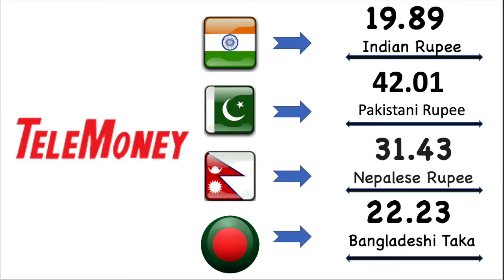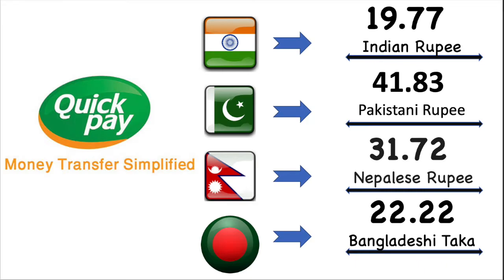Now we are going to talk about the market exchange value for each country in details. Indian Rupees market exchange value is 19.86. Pakistan Rupees market exchange value is 42.05. Nepal Rupees market exchange value is 31.40 Nepalese Rupee. Then for another service: Indian Rupees market exchange value is 19.77. Pakistan Rupees market exchange value is 41.83. Nepal Rupees market exchange value is 31.72. Bangladesh market exchange value is 22.22 Bangladesh Taka.